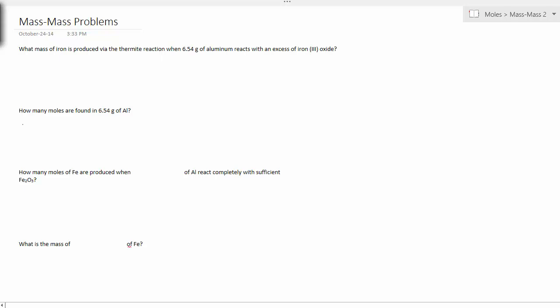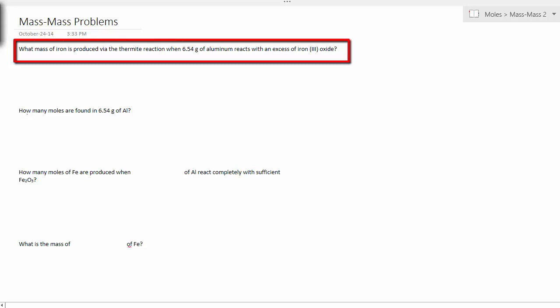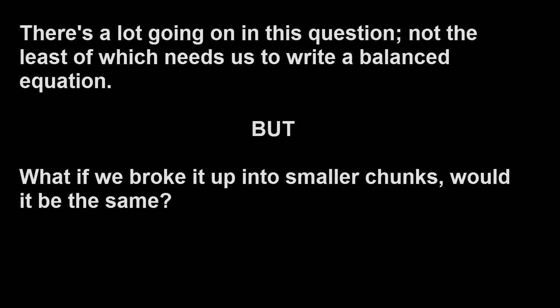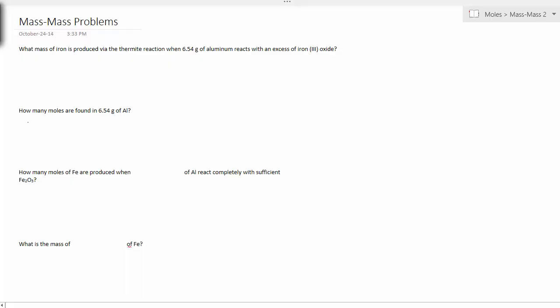If we have a look at another mass-mass problem, I'm going to say what mass of iron is produced via the thermite reaction when 6.54 grams of aluminum reacts with an excess of iron(III) oxide? Well, there's a lot going on there, not the least of which needs us to write a balanced chemical equation. But what if we looked at this and broke it into smaller chunks?